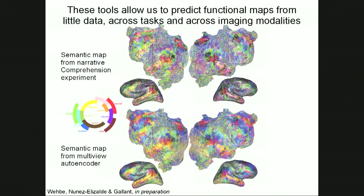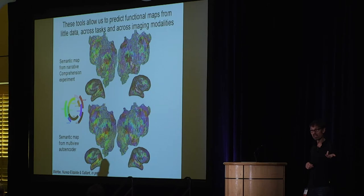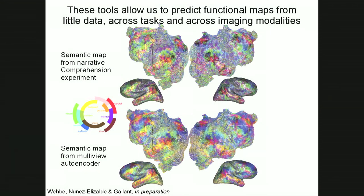You might think: can that actually ever work? It turns out to work remarkably well. On the top is a semantic map from a narrative comprehension experiment — from people listening to about three hours of stories in the MRI machine. On the bottom is a semantic map from a multi-view autoencoder obtained from someone watching just 10 minutes of a movie. The mapping between the top and the bottom is very, very good — these correlate quite highly, even though instead of three hours of data we've collected only 10 minutes.